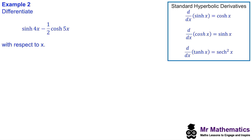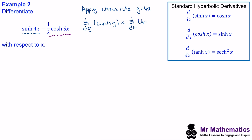In question two we're going to use the chain rule to differentiate composite functions with hyperbolic components. We split into two parts: sinh(4x) and one half cosh(5x). Applying the chain rule, let g equal 4x. We compute d/dg of sinh(g) multiplied by d/dx of 4x — the derivative of the outer function times the derivative of the inner function. The derivative of sinh(g) is cosh(g), and the derivative of 4x is 4, so substituting back gives 4 cosh(4x). This is the derivative of sinh(4x).